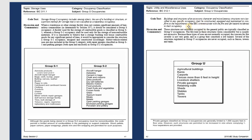Group U stands for Utility. The Group U occupancy structure varies but is usually not excessive. Examples include agricultural buildings, barns, carports, fences more than six feet high, private garages, retaining walls, sheds, stables, tanks, and towers. Basically, Group U is for garages.